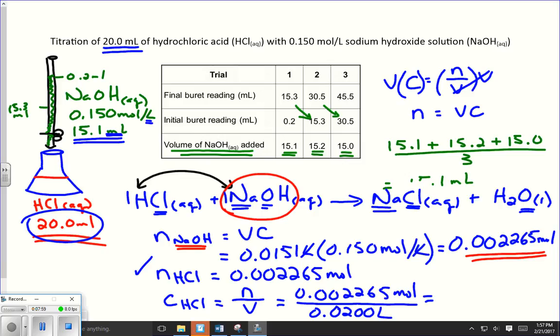So we use our calculator for this. And I get an answer of 0.11325 moles per liter. And now I have to ask myself the question, how many significant digits do I need for my final answer? Well, I have got three places to look for significant digits. 20.0 has three digits. 0.150 has three digits. And I am accurate to three digits on all of those.